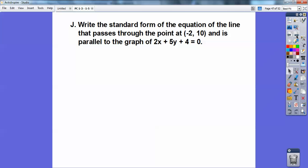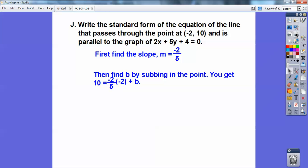Write the standard form of the equation of the line that passes through negative 2, 10 and is parallel to the graph 2x + 5y + 4 = 0. Parallel means I want the same slope as this. So the slope of this is negative 2/5. So I know it's going to be y = -2/5 x + b. Then substitute this point in to get b.